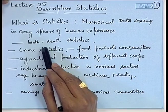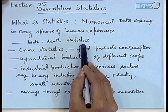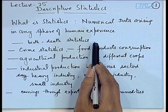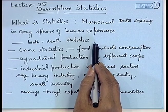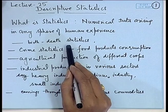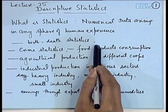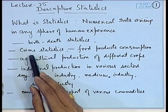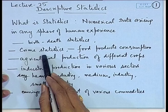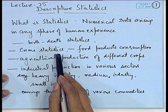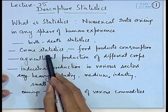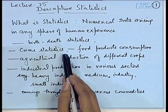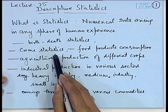For example, the records of birth and death are kept in every municipality or in village or town office. This data represents birth and death statistics. Every state, town, or police station keeps the record of crime statistics — that is, the number of crimes committed under various categories during a given period.